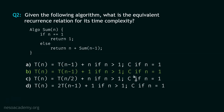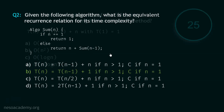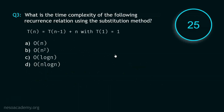Otherwise, if n is equal to 1 — that is the base case — then we get C, which represents the constant. The 1 here is also representing a constant: the time required to perform the addition. Now let's move to question number 3, and your time starts now.